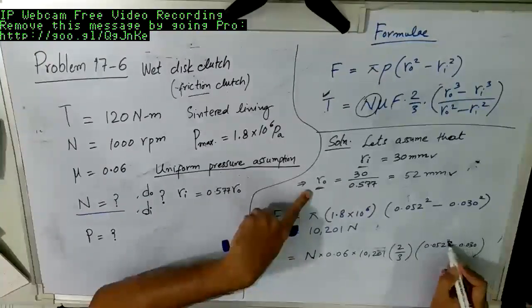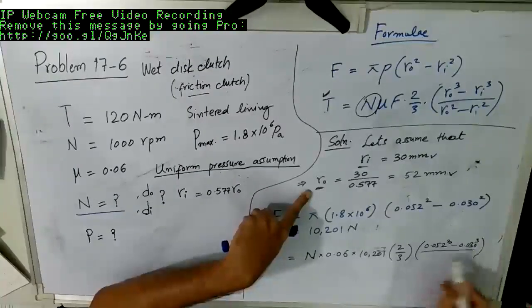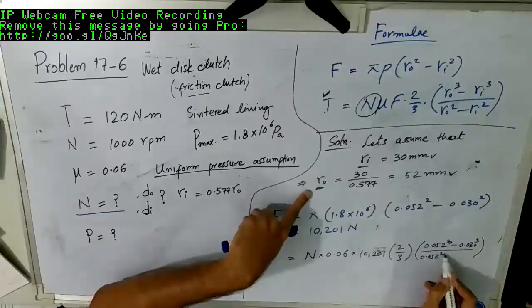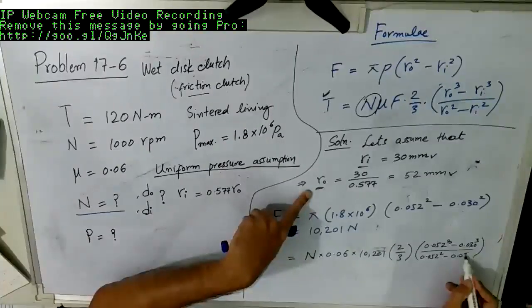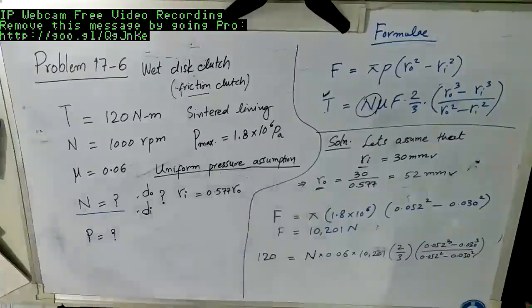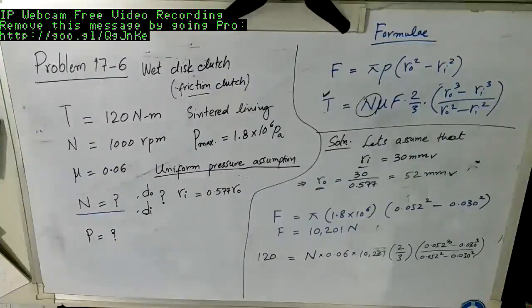Then we have this factor of 2 by 3, and then we have these outer and inner radius. So above we have cube and on down we have square, 0.052 cube minus 0.030 cube divided by 0.052 square minus 0.030 square.